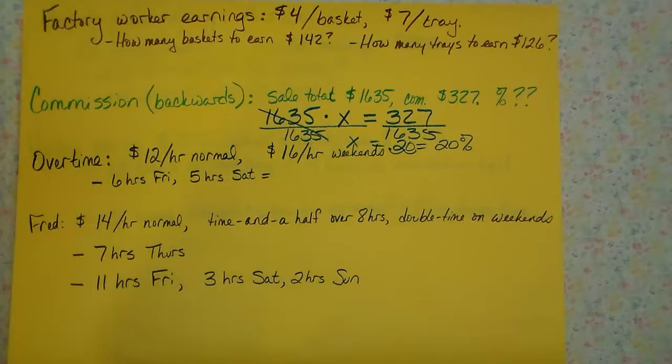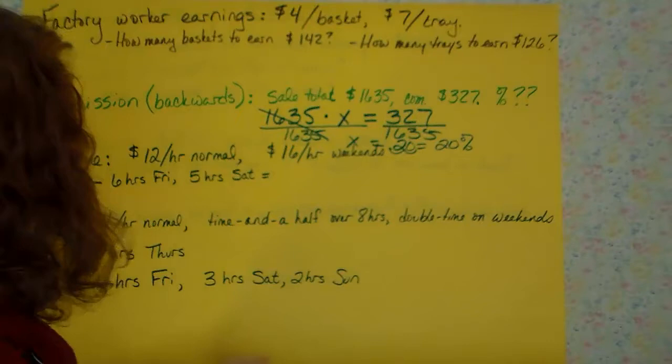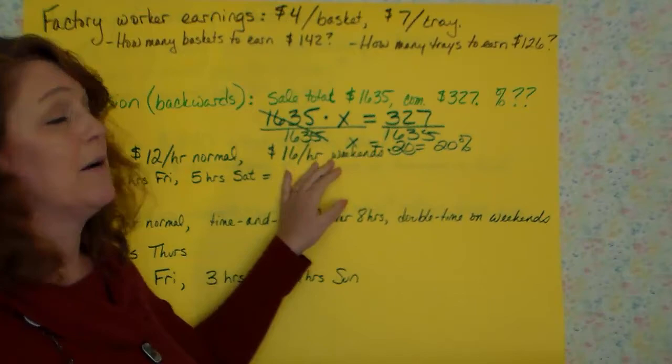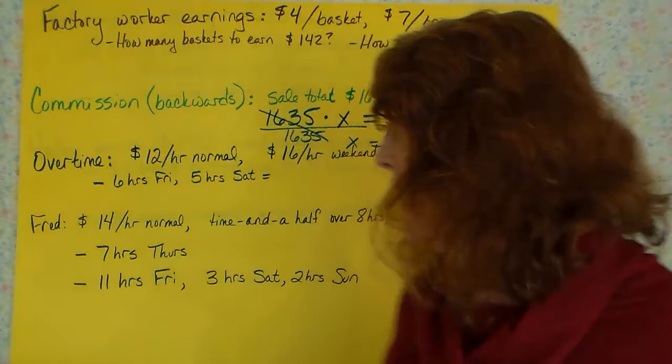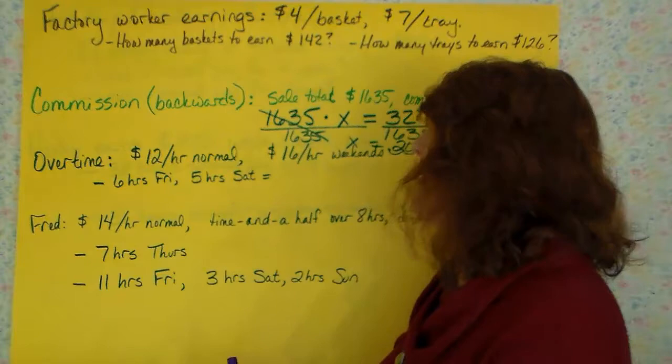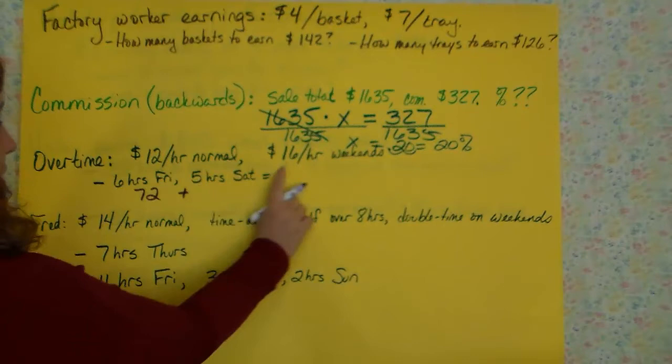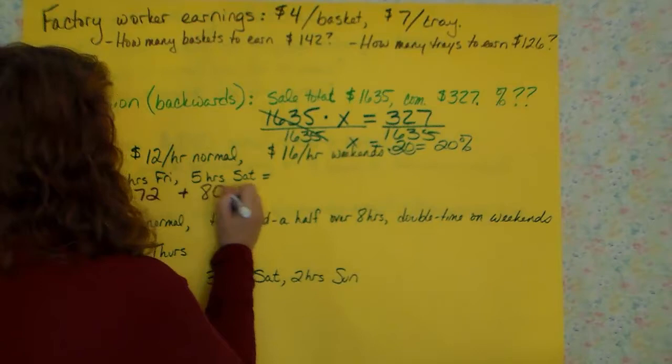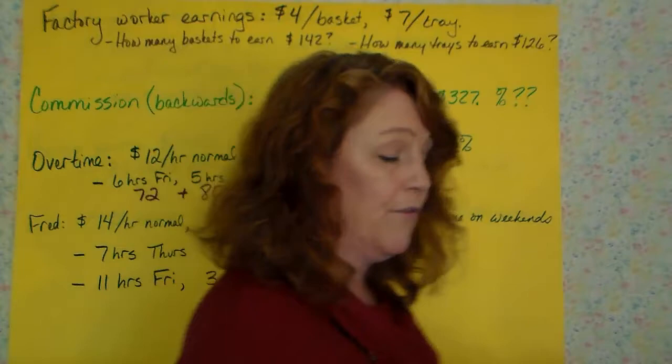Now we have overtime. Let's say you've got a person who works $12 an hour for their normal pay. But if you ask them to come in on the weekend, they are going to charge you $16 an hour. What if I ask this person to work 6 hours on Friday and 5 hours on Saturday? I need you to be able to figure that out. 6 hours times $12 an hour is going to be $72. And 5 hours times $16 an hour is going to be $80. And you're just going to add those two together and that's how much money that person makes for that week.